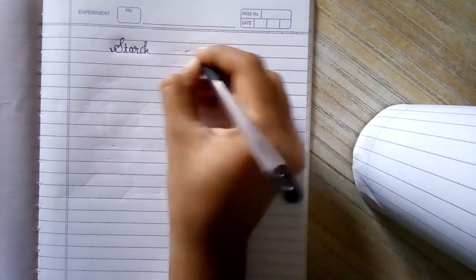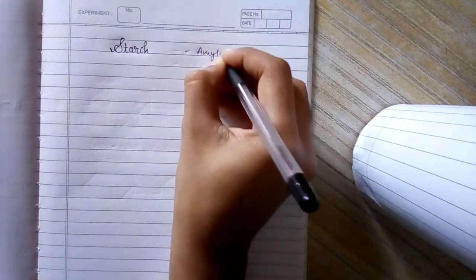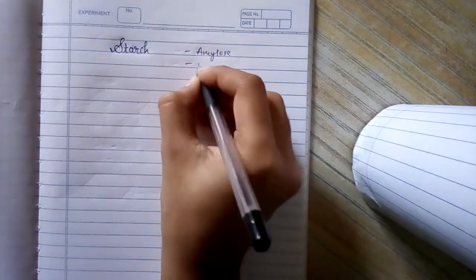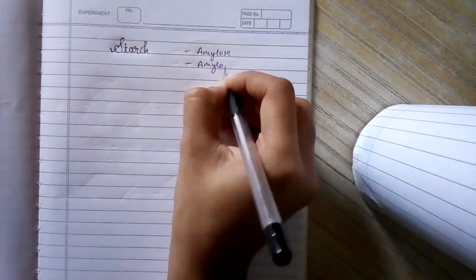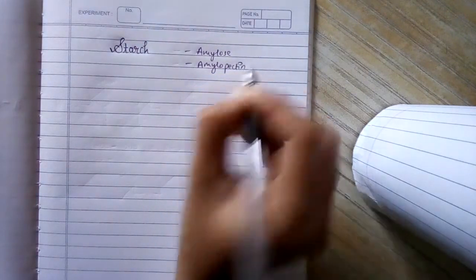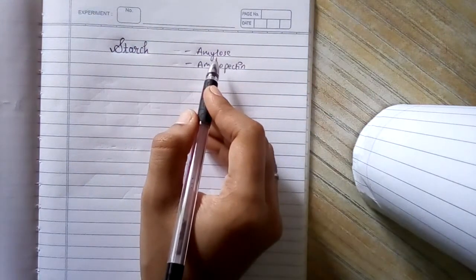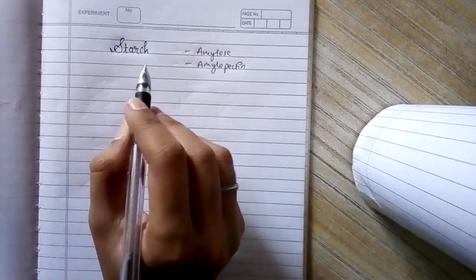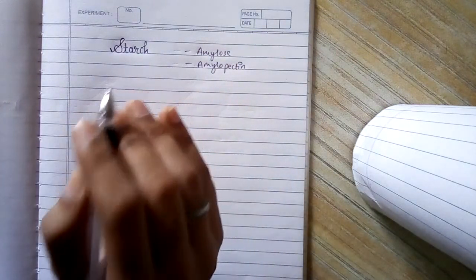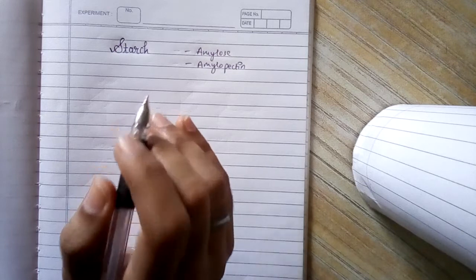Hey guys, today we will be going with starch. Starch is basically made up of amylose and amylopectin. So let's start with amylose. In this video you just have to remember the alpha D glucose structures.